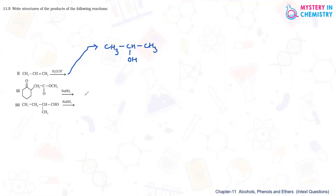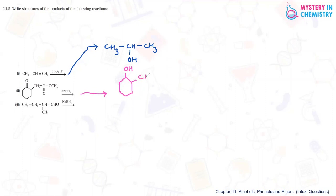The second reaction is reduction by NaBH4 — reduction involves addition of hydrogen at the double bond of the carbonyl carbon. The C double bond O group is replaced by an OH group when hydrogen is added at the carbonyl double bond.